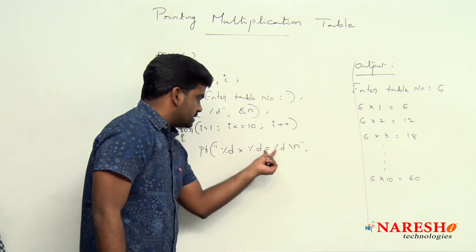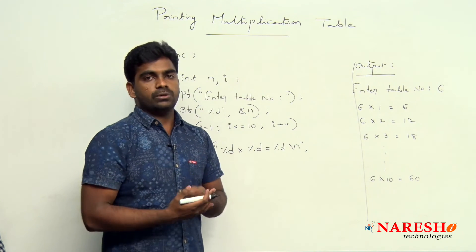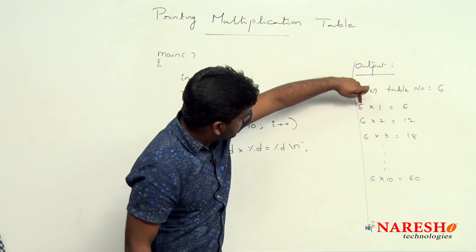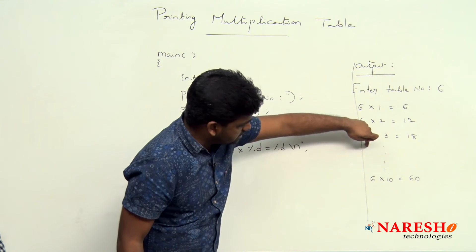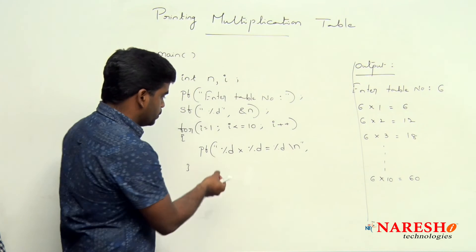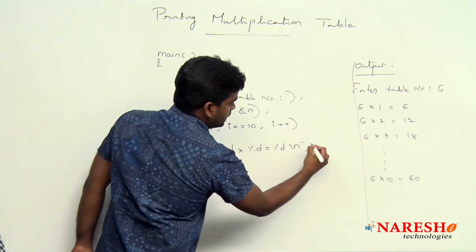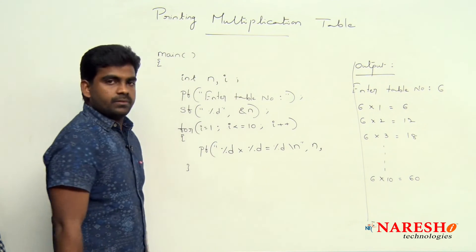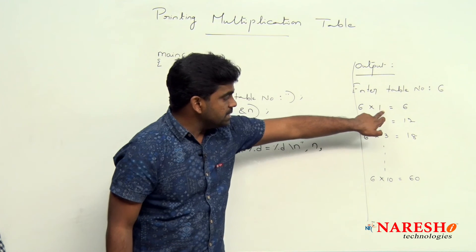In these places, what are the values we have to display? See here, 10 times we need to display that 6. 6 is nothing but n value. So in the first location, we need to display n comma.